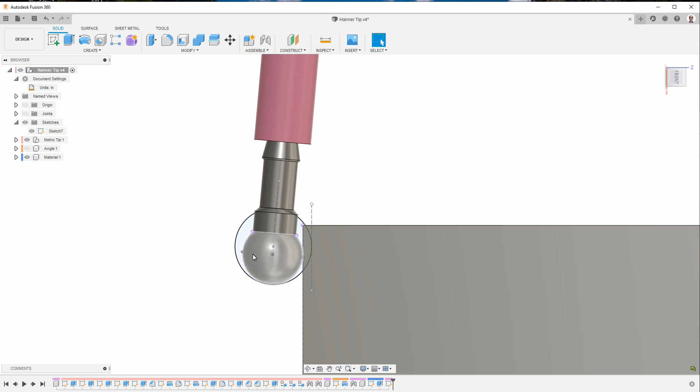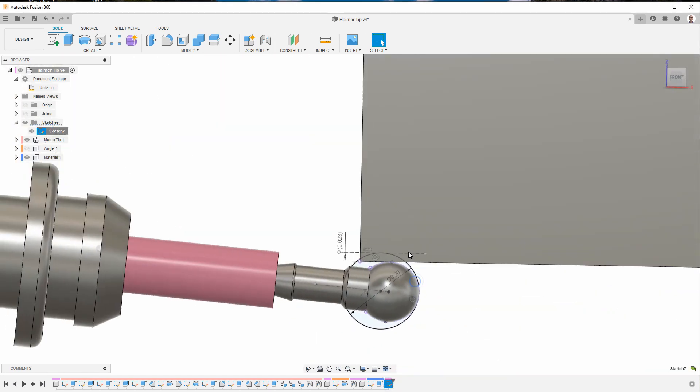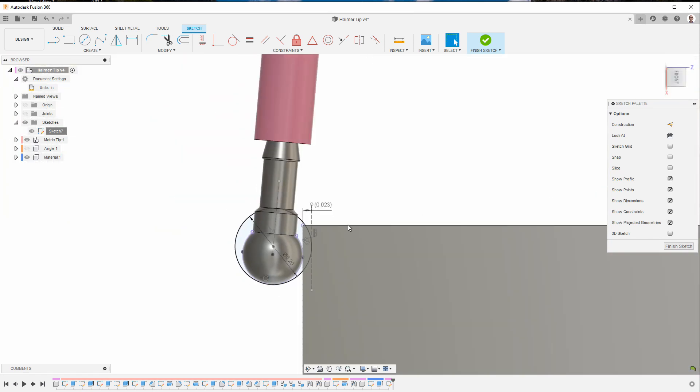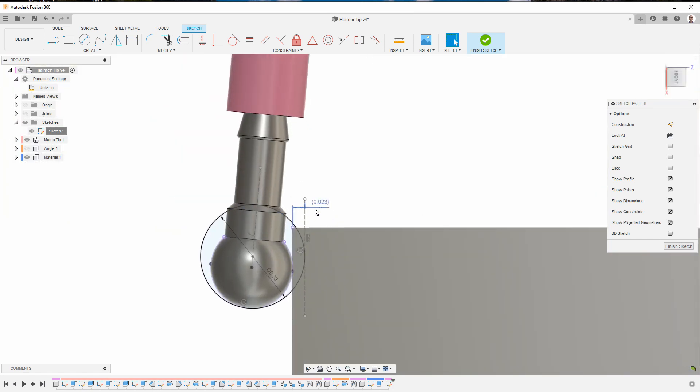In other words, what happens with this tip here when I really mean to use the 0.2 inch tip is that the zero position is actually going to be over here rather than here because it thinks it has this size tip. So let me go ahead and edit that sketch so that you can see the measurement that I put in place. And you can see that the difference between these two is 0.023 inches, which was exactly the difference that I saw.